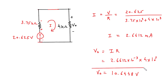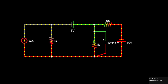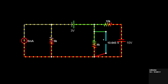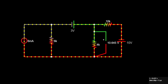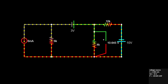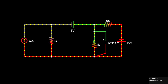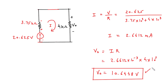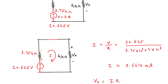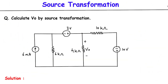We can also verify our answer in our simulator app. Here we can see in our simulator app we got the voltage across 4 kilo ohm as 10.645 volt. So hence we can say our answer is correct. If you find this video helpful then feel free to like, share and subscribe to this channel. Thank you.